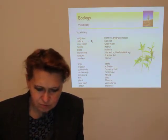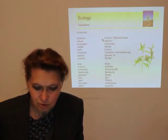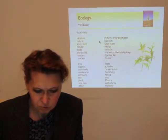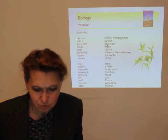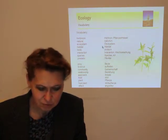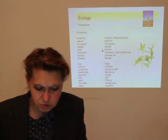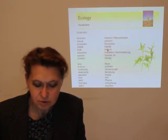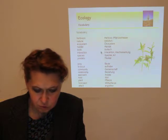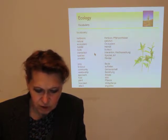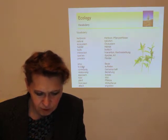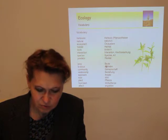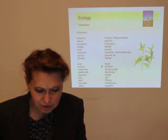So there are a lot of blue words explained in that slide. Herbivore — we probably know this — herbivore, plants and fressen. Natural means natürlich. Ecosystem — Ökosystem. Habitat means Lebensraum in German. Biotic is biotisch. Interaction — Wechselwirkung. Species — die Art. Predator — der Räuber. Prey — die Beute, very important.